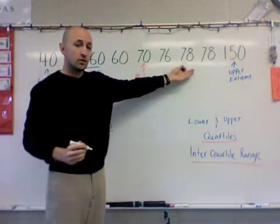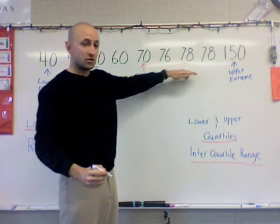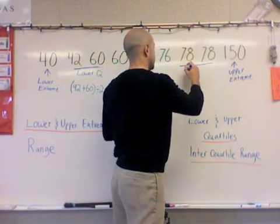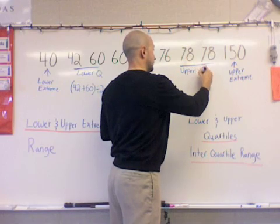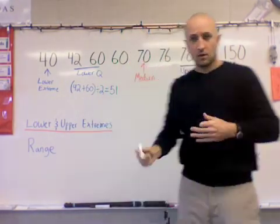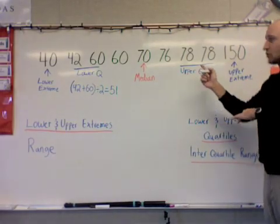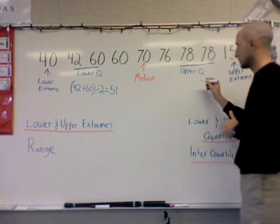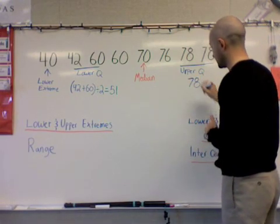Now we're going to have to come over here and do the same thing for the upper quartile. Well, we see my center two numbers are 78. This one's a little bit easier to do. We'll call this our upper Q, upper quartile. 78 plus 78 divided by two. Well, since they are both the same number, it remains. So we know that our upper quartile is 78.